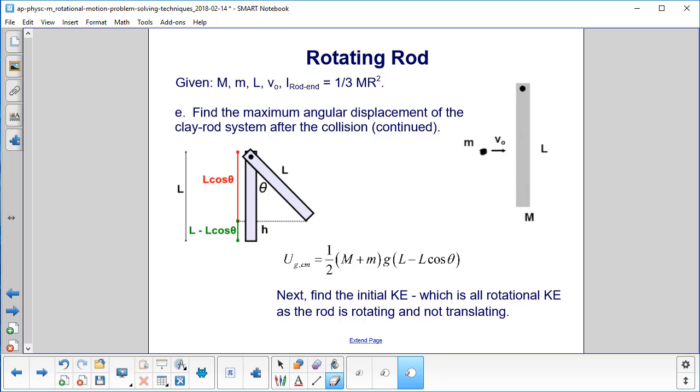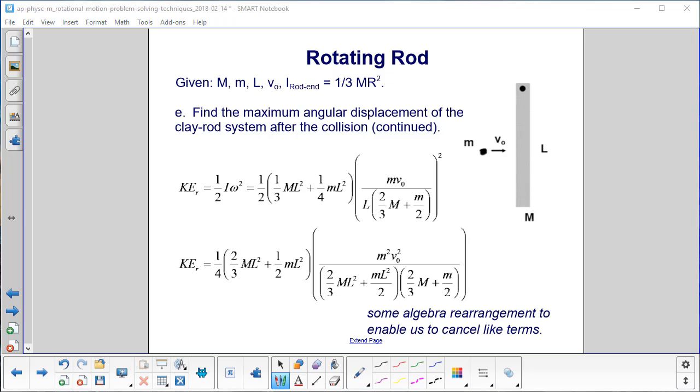Now we need to find the initial kinetic energy, which as we just said, was all rotational kinetic energy, as the rod is rotating and not translating. And translating means linear. Calculating the rotational kinetic energy, it is 1 half I omega squared. Here's our value of the moment of inertia found earlier. And here is our omega. And then we have to square it. So first, we square the term on the right, and we come up with this expression here, okay?